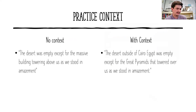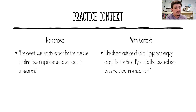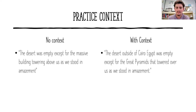To give you an idea of what context looks like: without context, if I just said, 'the desert was empty except for the massive building towering above us as we stood in amazement' — okay, where is this building? What desert? What kind of building? It's very vague and empty and you're not really sure what they're talking about. Now, with context: 'the desert outside of Cairo, Egypt was empty except for the great pyramids that towered over us as we stood in amazement.' We find out the desert is outside of Cairo, Egypt, and the building is the great pyramids. It gives us a sense of where we are and what's in front of us — a whole lot more information that you can actually use.